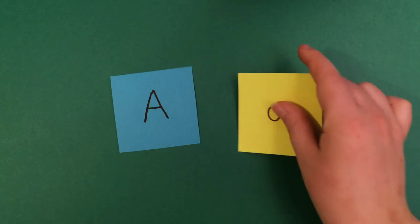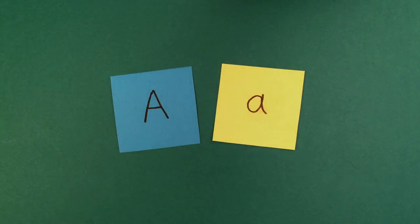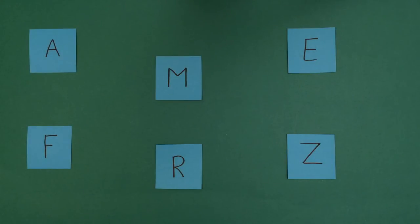Then you can write uppercase letters on one of the colors and the matching lowercase letter on the other color. You can place the uppercase letters down, making sure to spread them apart a little to give some room.